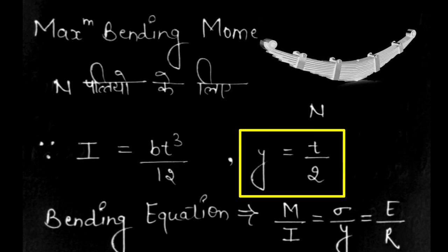When we talk about the leaf, the thickness is t, so we take Y as half of t, which is t by 2.